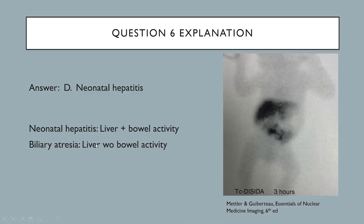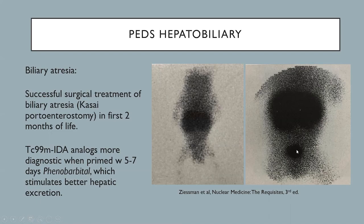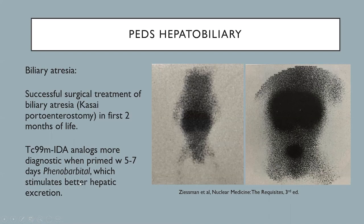This example of biliary atresia shows significant activity in the liver on initial imaging but no activity in the bowel. 24-hour imaging again shows significant liver activity and some activity in the urinary bladder, but no activity in the small bowel — confirming biliary atresia. Successful surgical treatment with the Kasai procedure in the first two months of life may help. Technetium-99m IDA analogs are more diagnostic when the liver is primed with five to seven days of phenobarbital, which stimulates better hepatic excretion.